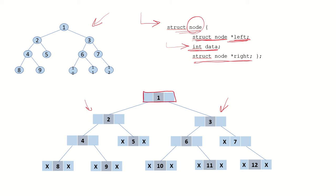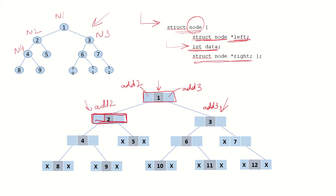This is the root node. It has the data element, and it will have the addresses of its children. Suppose node 1 is the root, node 2 has address 2, and node 3 has address 3. So in the root node we store address 2 for the left child and address 3 for the right child. Similarly, in node 2, we have the data element, and the left node pointer stores the address of node 4 — suppose address 4 — and address 5 for the right node.